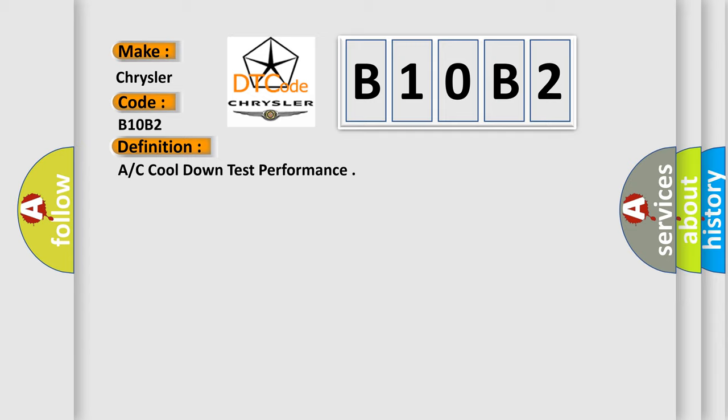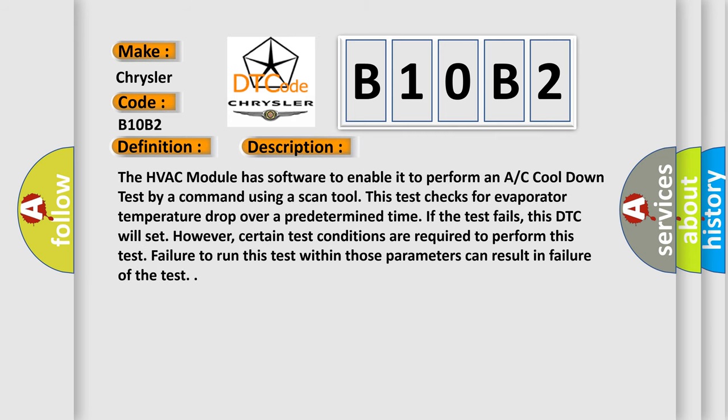And now this is a short description of this DTC code. The HVAC module has software to enable it to perform an A/C cool down test by a command using a scan tool. This test checks for evaporator temperature drop over a predetermined time. If the test fails, this DTC will set. However, certain test conditions are required to perform this test. Failure to run this test within those parameters can result in failure of the test. This diagnostic error occurs most often in these cases: A/C system working improperly.